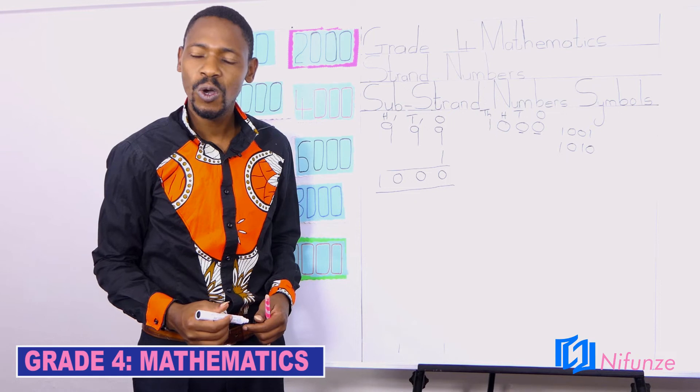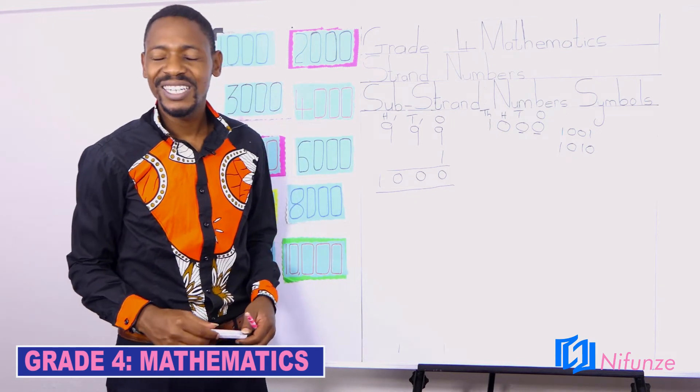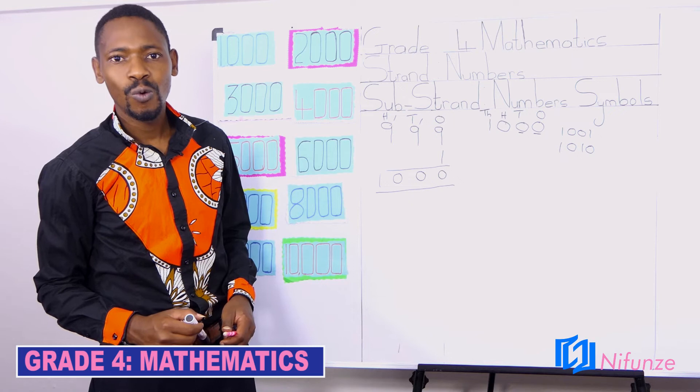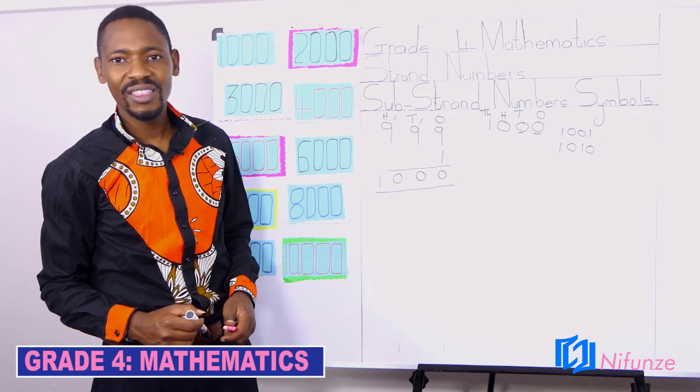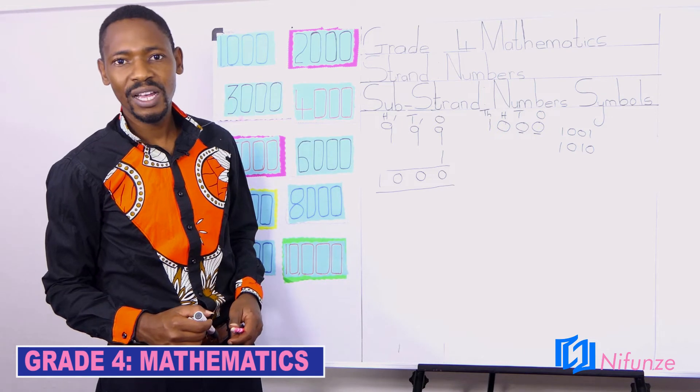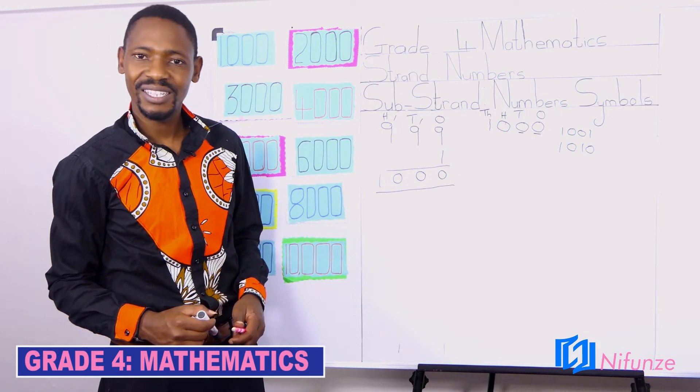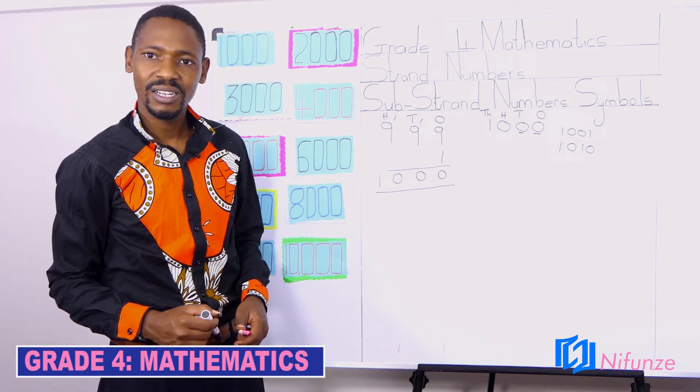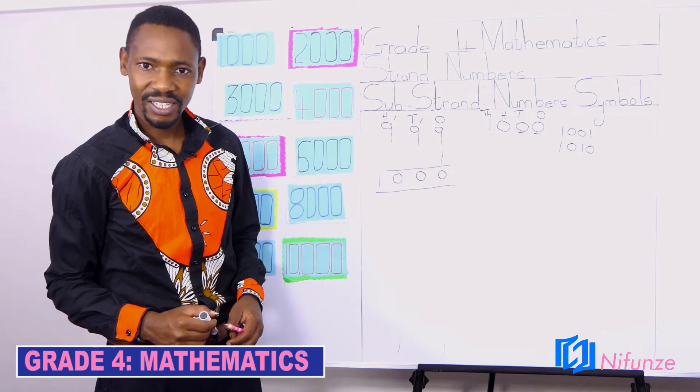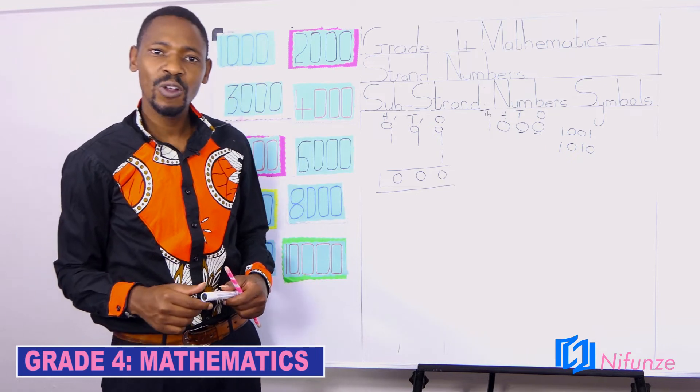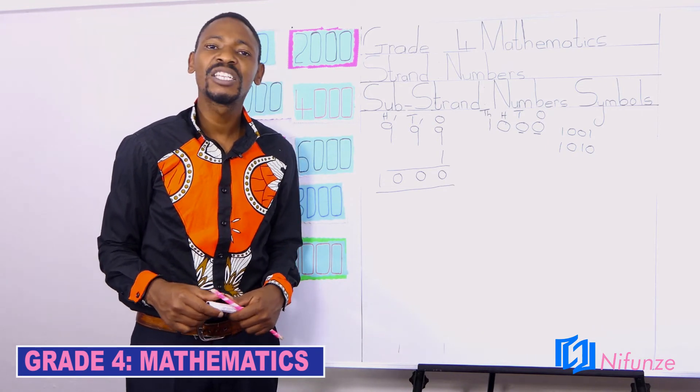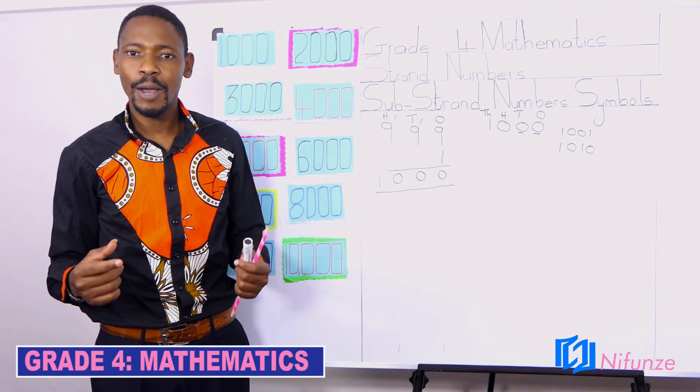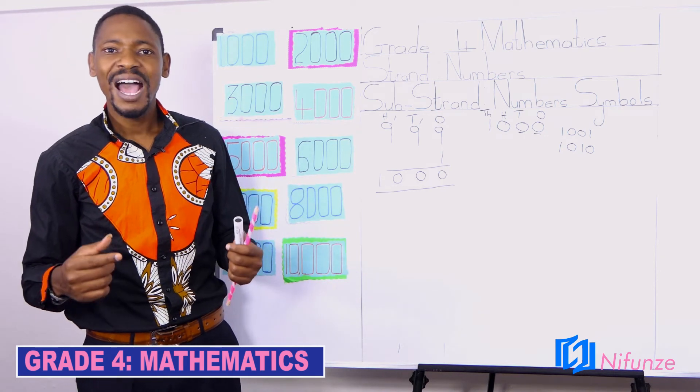Now you can continue counting. 1,011, 1,012, 1,013, 1,014, 1,015, 1,016, 1,017, 1,018, 1,019, 1,020. Now, when we continue counting number after number, we may take so long. So we shall reach a place and we shall arrive to a certain number.